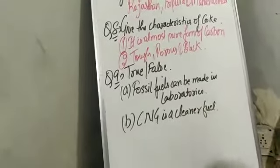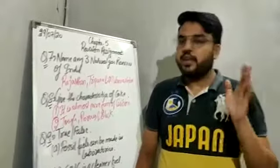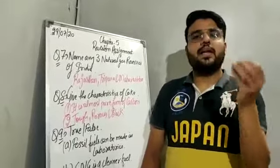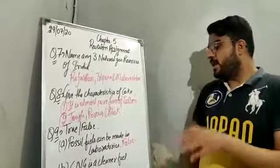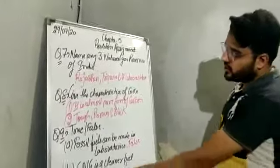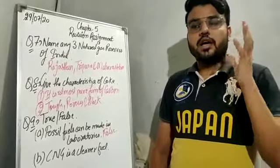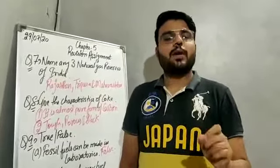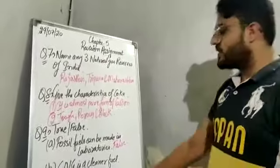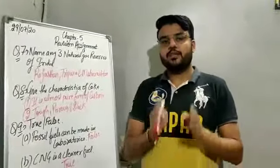Question number nine: true or false. Statement one — fossil fuels can be made in laboratories. No, because the formation of fossil fuels takes millions of years and we cannot make fossil fuels in laboratories. So the statement is false. Statement two — CNG is a cleaner fuel. CNG is a less polluting fuel; it causes less pollution as compared to petrol and diesel. So the statement is true.